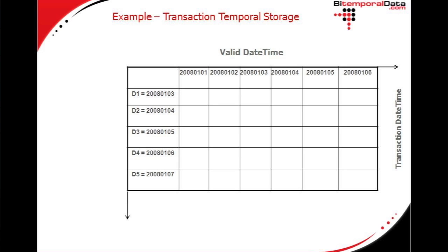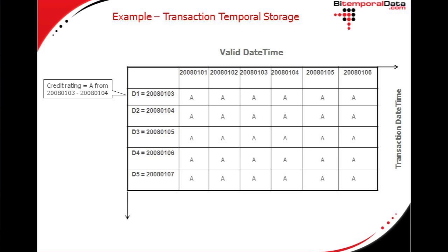Next, transaction temporal storage. Our first event: A from the third to the fourth. Since we don't have sensitivity to the valid time dimension, we assume it's A across the entire x-axis. For event two, nothing happens — this isn't fresh information. We already knew the credit rating was A on the fourth, and now someone tells us it was B on the third. We wouldn't do anything with that because it's old, stale information.